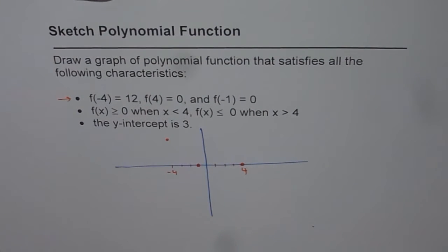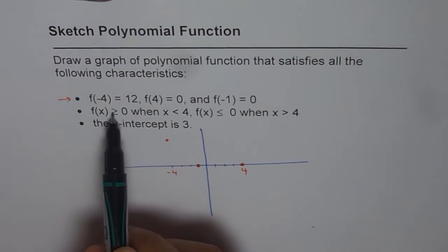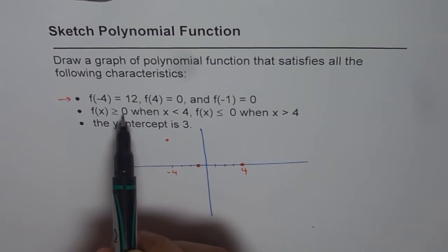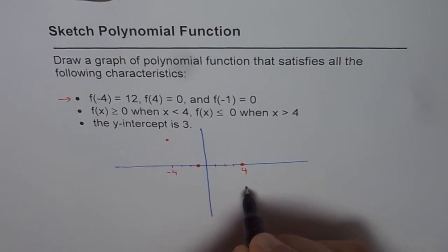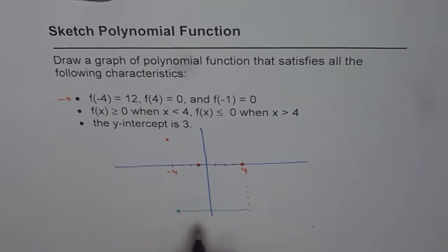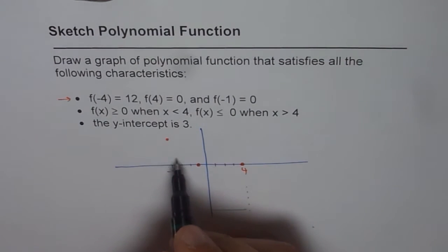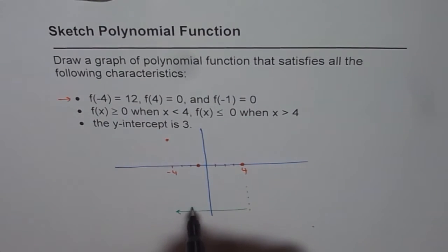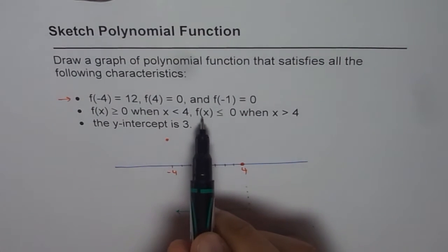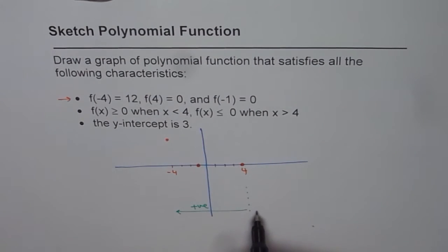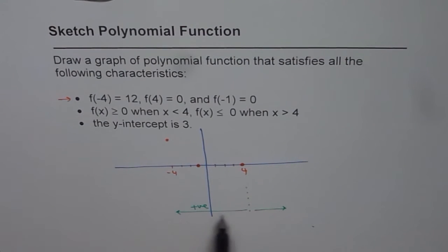The next criteria given to us is f(x) ≥ 0, meaning positive, when x < 4 — that is to say, if you are on this side, the function is positive and we are above the x-axis. But it is less than 0 when the x-value is greater than 4. So this is our condition — I have drawn a line here to show that I need to incorporate this condition when I sketch the polynomial function.